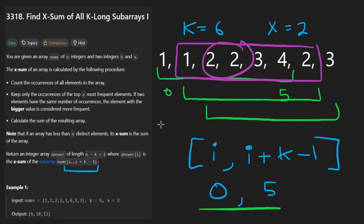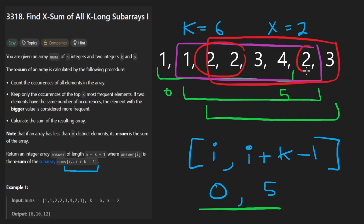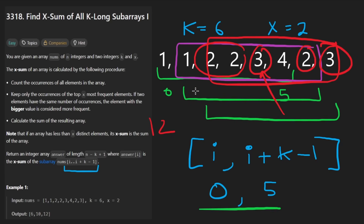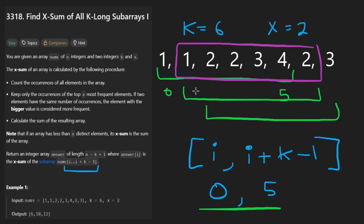Lastly, for the third subarray, there are three occurrences of two and two occurrences of three, and only one occurrence of four, so we stick with those top two. We get a total sum of 12 — that's why you see 12 in the output. Now let's talk about what algorithm we're going to use.